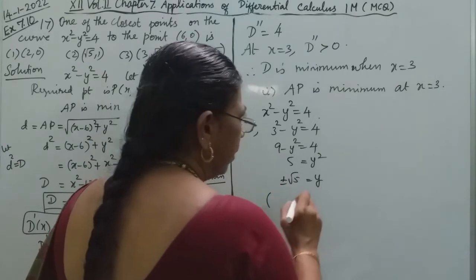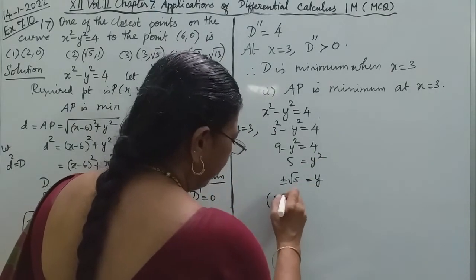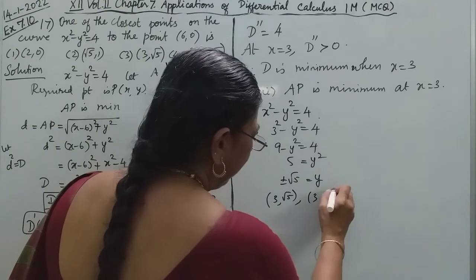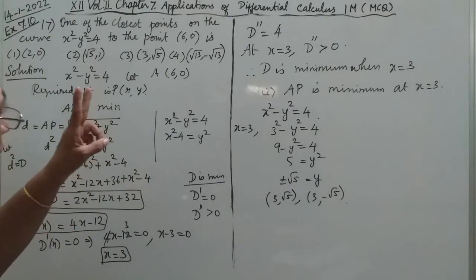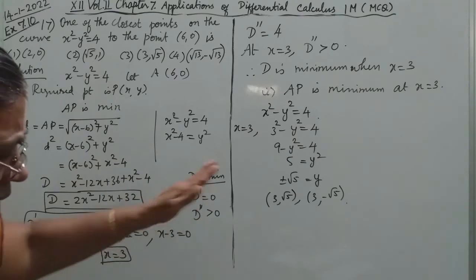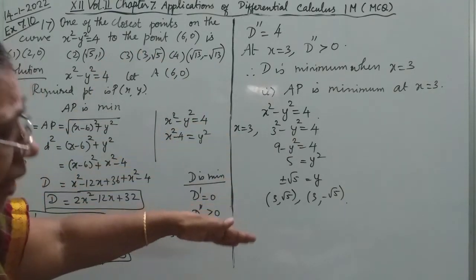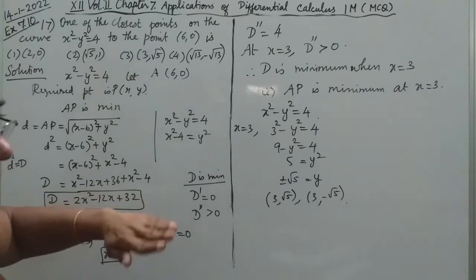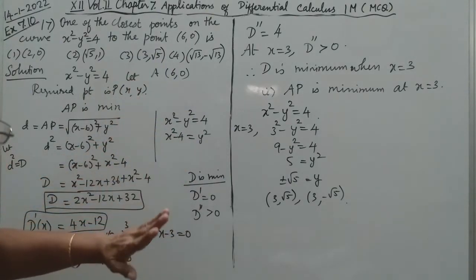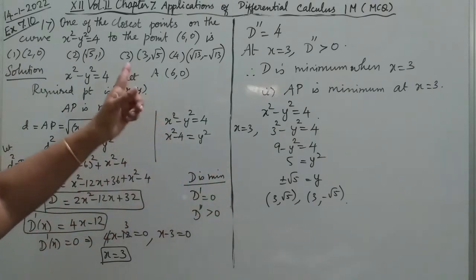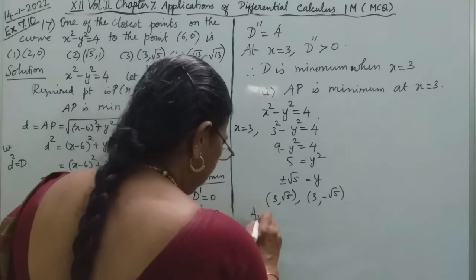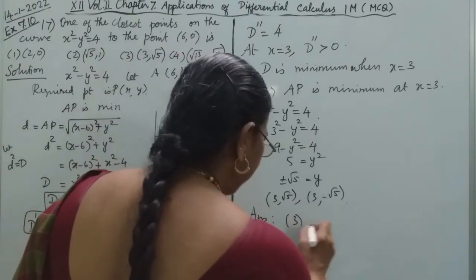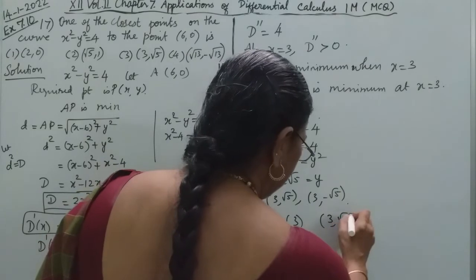So y equals plus or minus root 5. We get two points. The closest points on the hyperbola to (6, 0) are (3, root 5) and (3, negative root 5). The answer is option number 3: (3, ±√5).